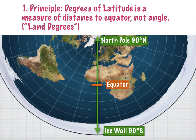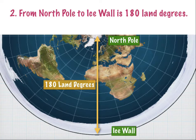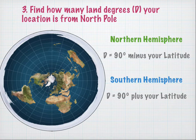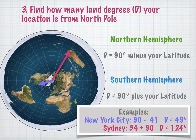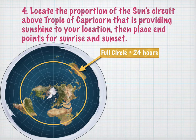Degrees of latitude are not a measure of angle but rather distance — we'll call these land degrees. The north pole is 90 land degrees from the equator, and the ice wall is also 90 land degrees from the equator, so from the north pole to the ice wall is 180 land degrees. You can place your location anywhere on this continuum. To find how many land degrees your location is from the north pole: if you live in the northern hemisphere, it's 90 minus your latitude; if in the southern hemisphere, it's 90 plus your latitude. Examples include New York City and Sydney, Australia.